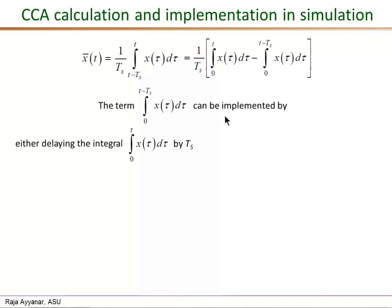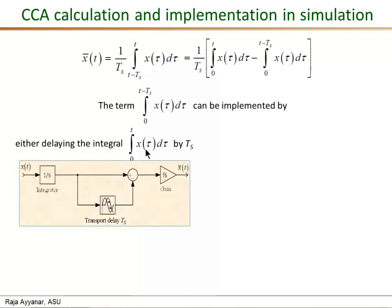The second quantity, the integral from 0 to t minus Ts, can once again be implemented using two different ways. The first method is to just delay the integral from 0 to t of x of t by a duration of Ts and you get exactly this value.